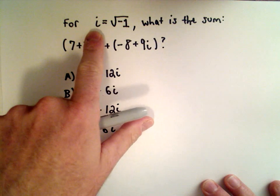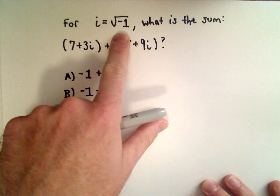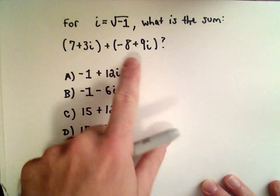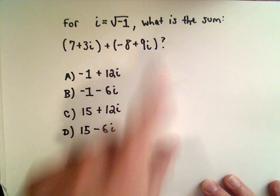So here we've got that we're given the information that i equals the square root of negative 1. We want to know what is the sum. We have the quantity 7 plus 3i plus the quantity negative 8 plus 9i.